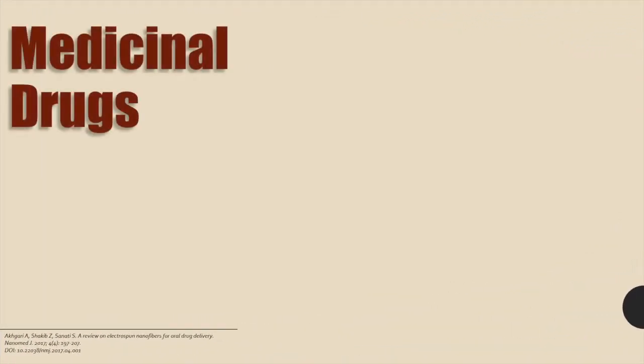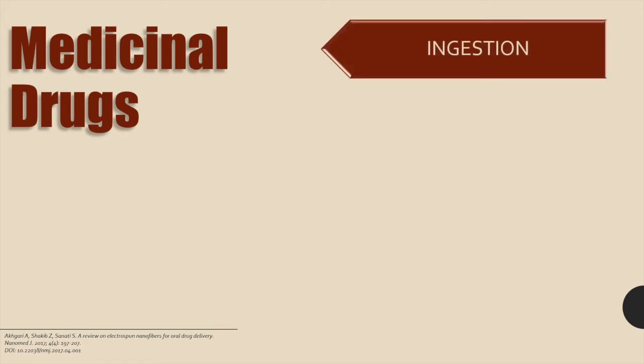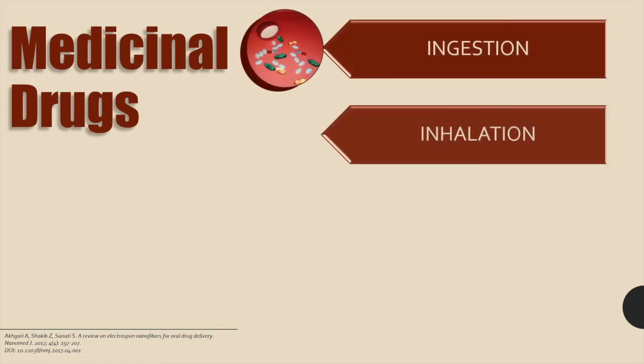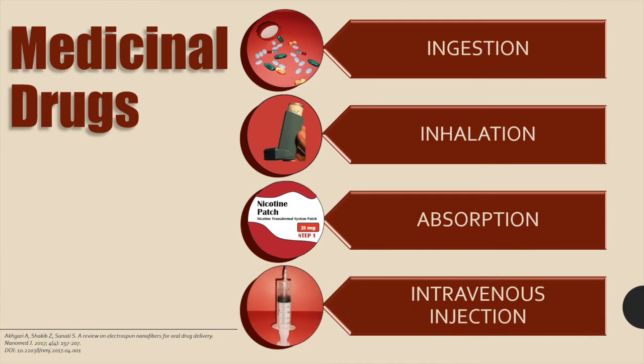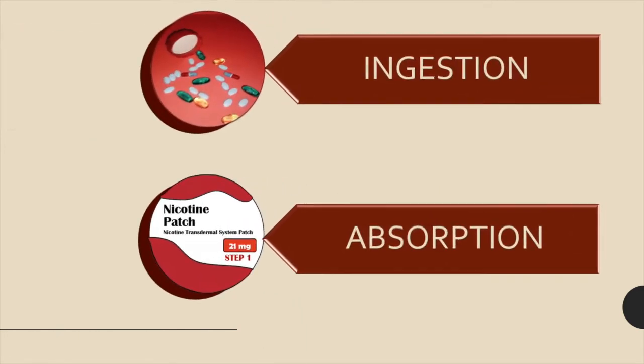Medicinal drugs can be taken in various ways, by ingestion, like a pill or cough syrup, by inhalation, like asthma medication, by absorption through the skin, like nicotine patches, or by intravenous injection, like morphine through an IV. In this video, I will be focusing on the drugs that are taken through ingestion and through the skin.